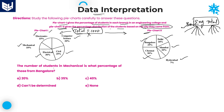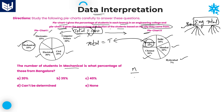The first question: the number of students in mechanical — we don't know the number — but we know mechanical is 10% of total. Let us consider total as T. That particular value is what percent of those from Bangalore. Bangalore is 25% of total. So we calculate: number of students from mechanical divided by number of students from Bangalore, multiplied by 100 to get the required percentage.